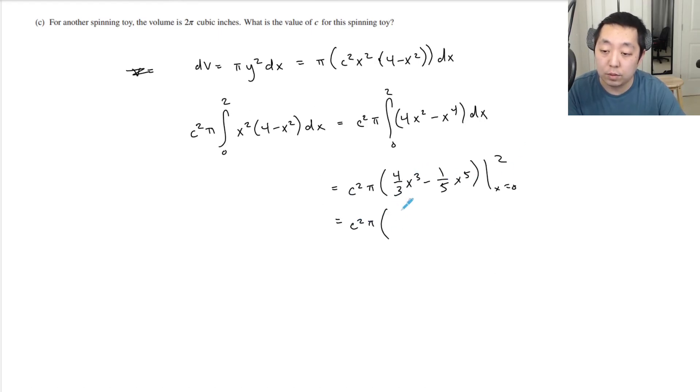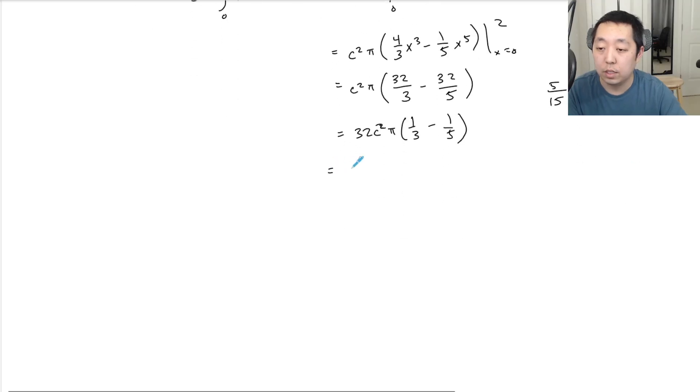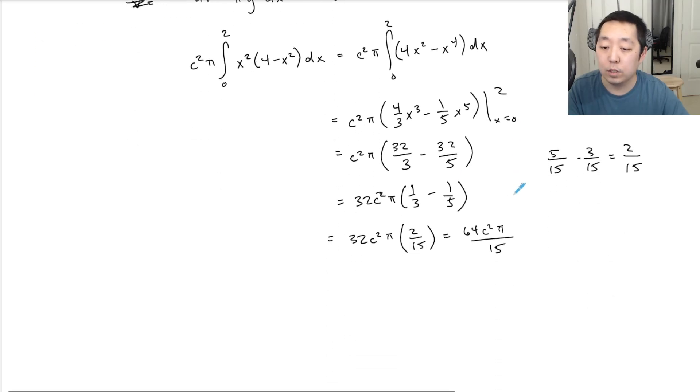I can't use the calculator for this. c²π times: 2³ is 8, 8·4 is 32, so that's 32/3. 2⁵ is 32, so 32/5. I can pull out 32: that's 32(1/3 - 1/5) = 32(5/15 - 3/15) = 32(2/15) = 64c²π/15. And they're saying that volume equals 2π.